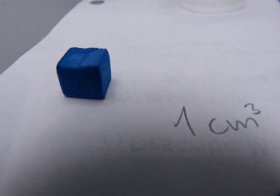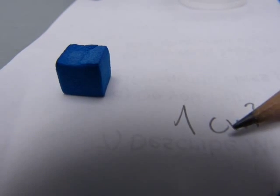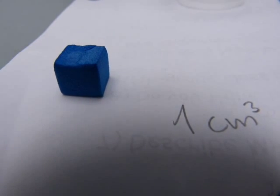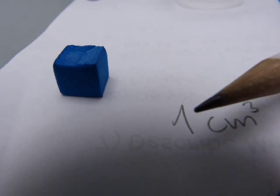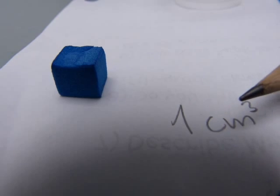A cubic centimeter is an amount of space. It's written this way, with lowercase c and lowercase m, and a number 3 in the upper right hand corner. It's not 3 centimeters or anything else, you can pronounce it centimeters cubed or cubic centimeters.